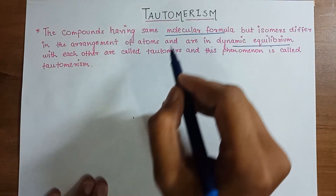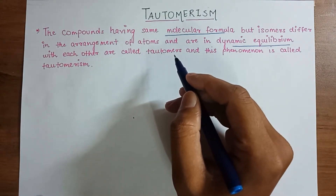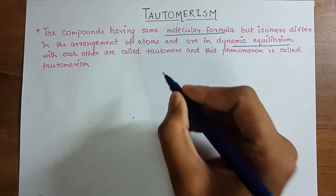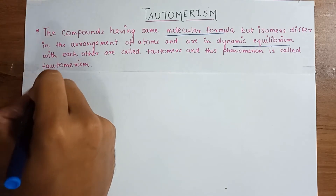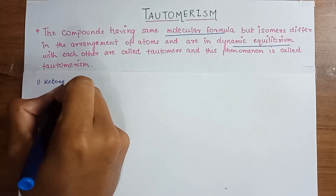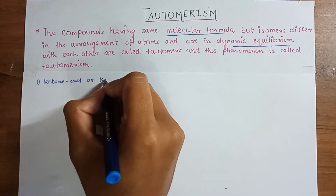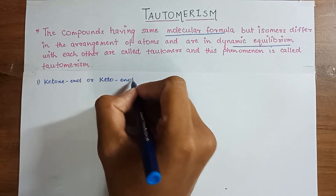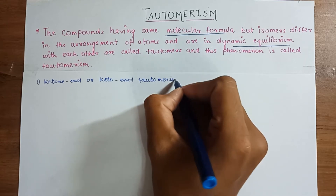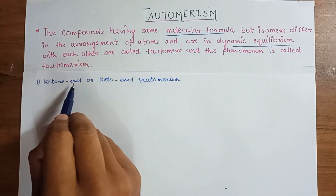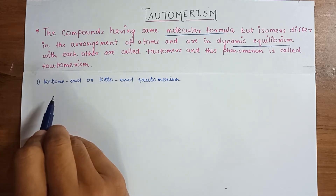This definition looks quite difficult, but I will try my best to explain it in the best possible way. Let us see the various forms of tautomers. The first form is keto-enol tautomerism. In this, one isomer will be of ketone and the other will be of enol, and they will be in dynamic equilibrium with each other.